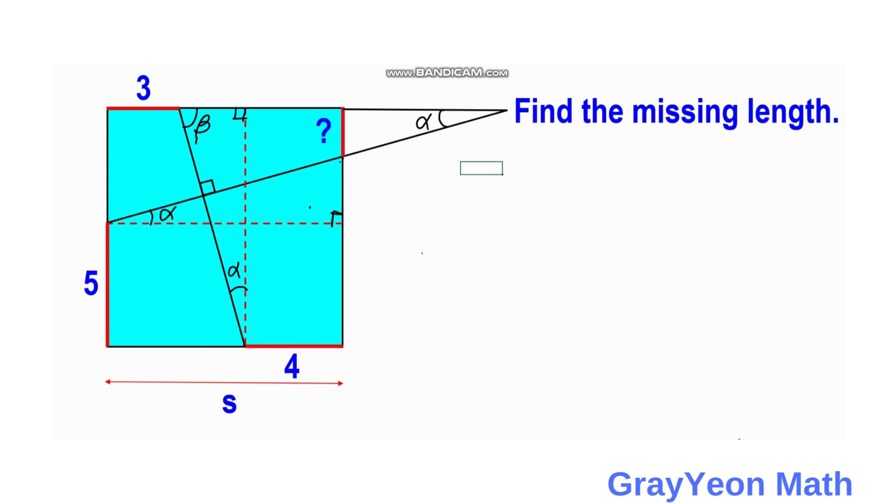We notice that one side of this triangle has a side of the square, the whole side of the square, and we call that as S.